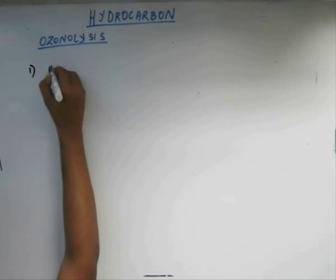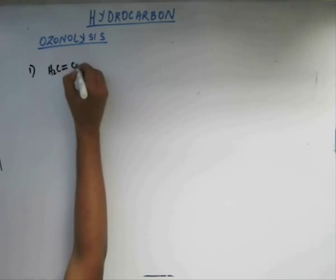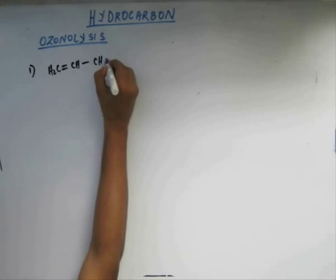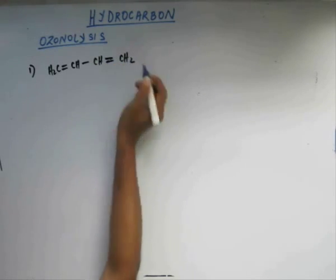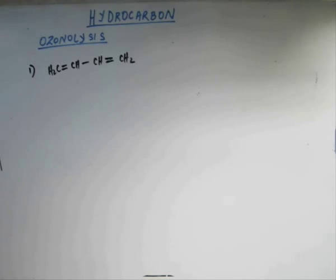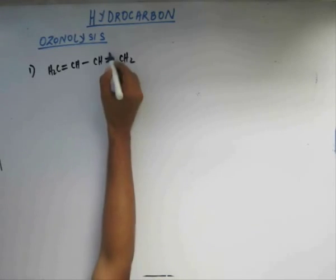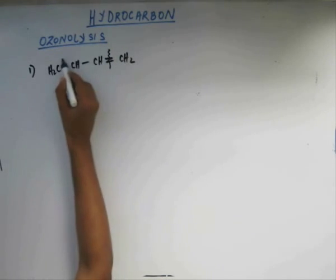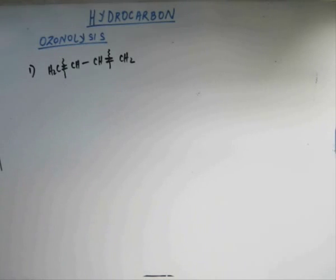Number 1: suppose I give you 1,3-dibutene. In this case we have 2 pi bonds. Nothing to worry about — what you did for 1 pi bond, you will do the same for the next pi bond. If you have 2 pi bonds, you will break the pi bond in the same manner as you did for 1 pi bond and you will do the cleavage on both pi bonds exactly in the manner you did when you had only 1 pi bond.